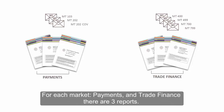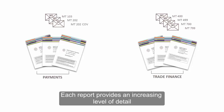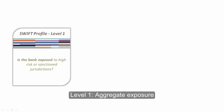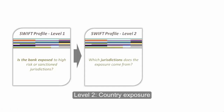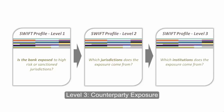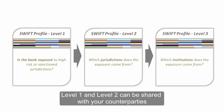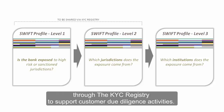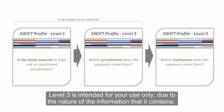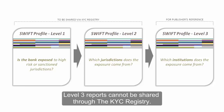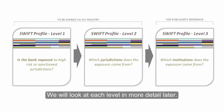For each market — payments and trade finance — there are three reports, each providing an increasing level of detail. Level 1 is aggregate exposure, Level 2 is country exposure, and Level 3 is counterparty exposure. Level 1 and Level 2 can be shared with your counterparties through the KYC registry to support customer due diligence activities. Level 3 is intended for your use only due to the nature of the information it contains and cannot be shared through the KYC registry. We will look at each level in more detail later.